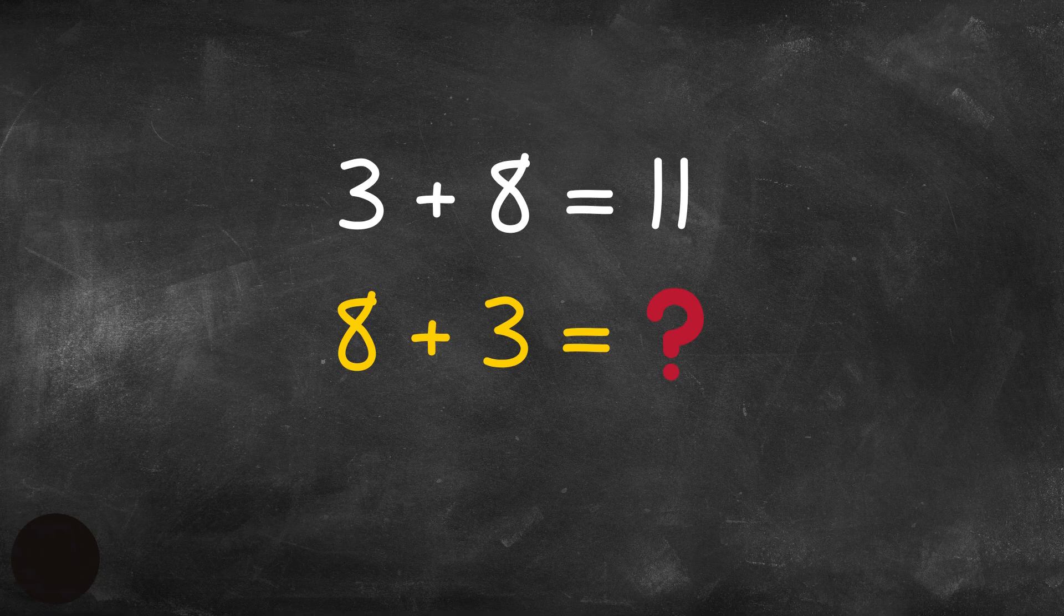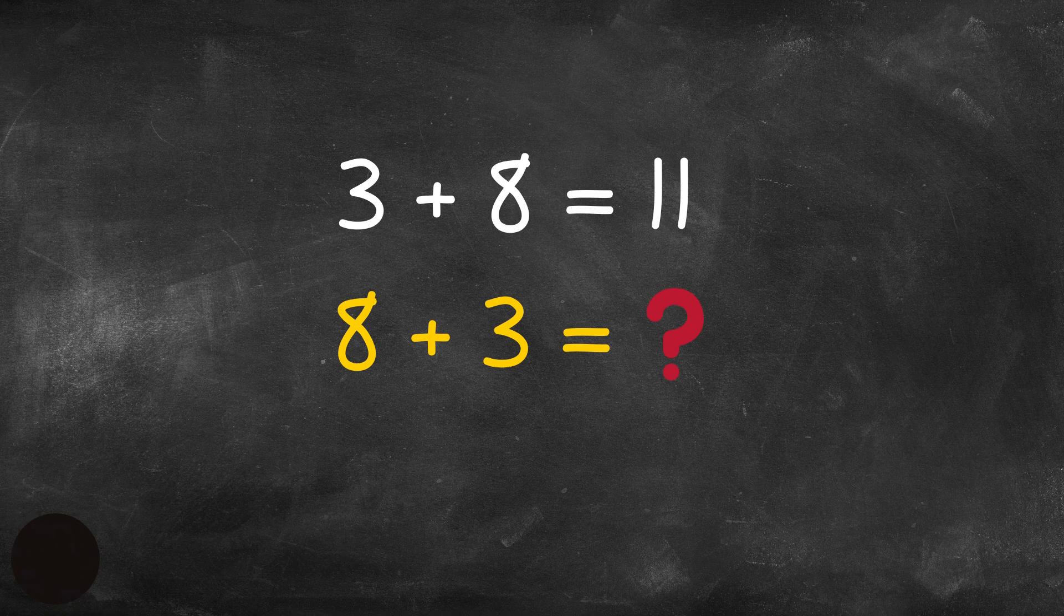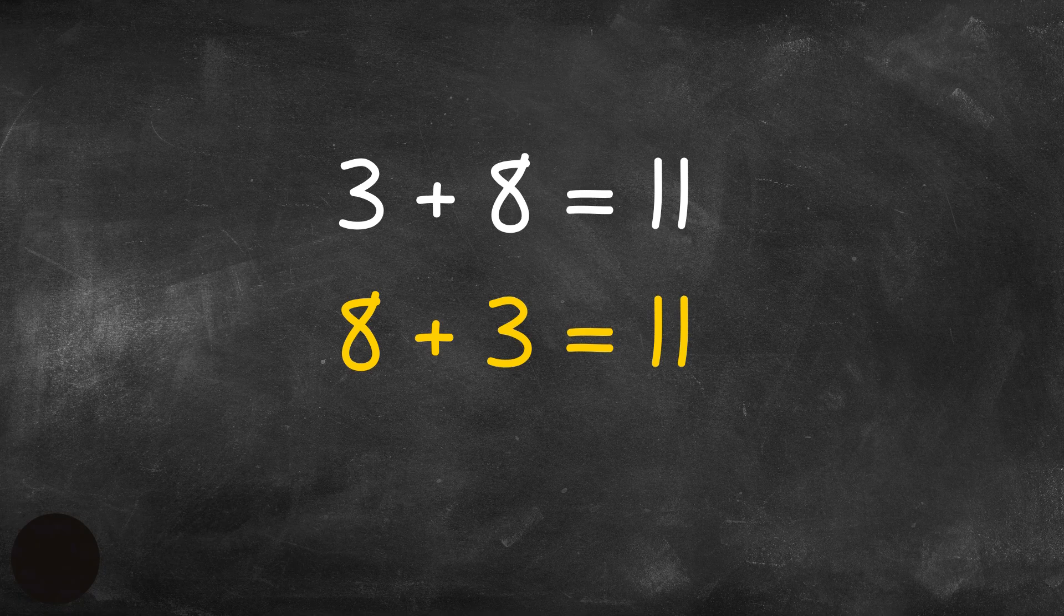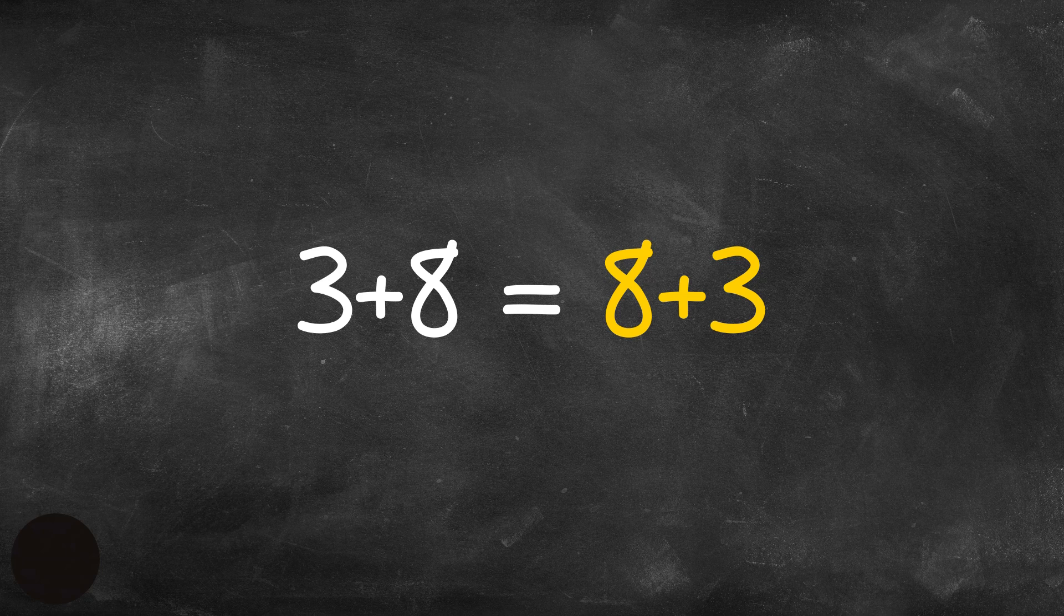So, if 3 plus 8 equals 11, what happens if we change the order of the addends and we make the 8 come first, then the 3? Now, we have 8 plus 3. So, 8 plus 3 equals what? That's right, 11 also. So, 3 plus 8 equals 11, and also 8 plus 3 equals 11, which means that 3 plus 8 is equal to 8 plus 3.